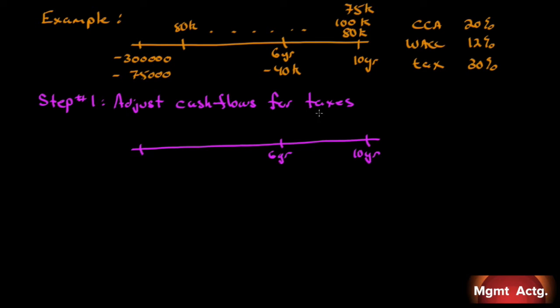Step number one: let's just rewrite our timeline here to adjust the cash flows for taxes. The cost of the machine is $300,000 - taxes don't affect that. We have to increase working capital by $75,000 - taxes don't affect that. At the end, we recover $100,000 on the machine and release $75,000 in working capital - taxes don't affect those either. These are unaffected cash flows from taxes.